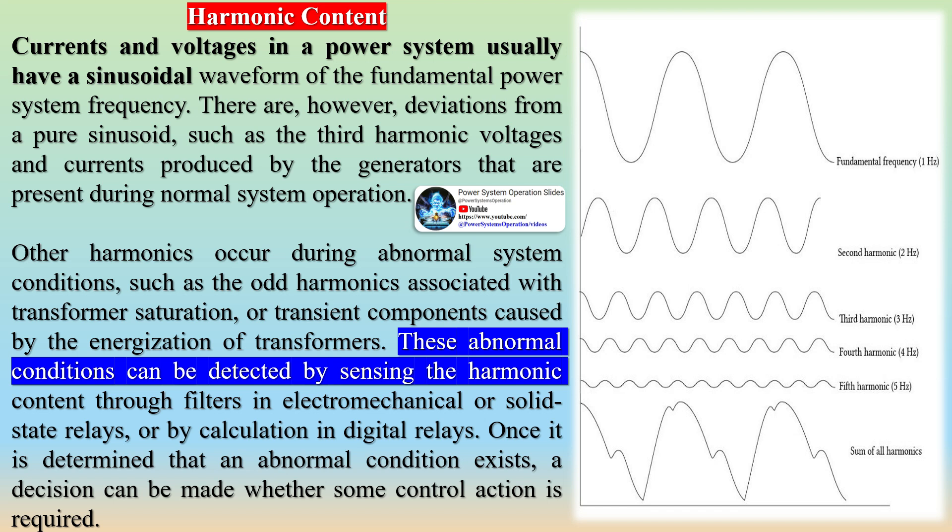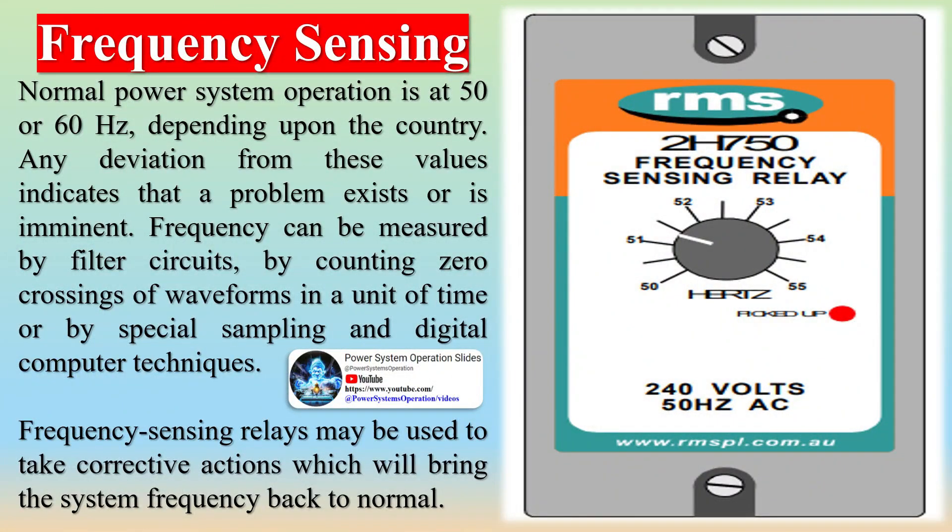Frequency sensing. Normal power system operation is at 50 or 60 Hz, depending upon the country. Any deviation from these values indicates that a problem exists or is imminent.